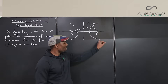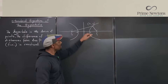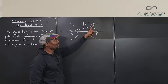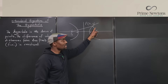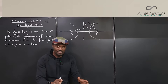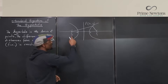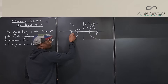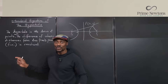All the points on this curve satisfy this definition. If you pick any point — let's call it P — the distance from P to one focus compared to the distance from P to the other focus will always have a constant difference, whether you are on this branch of the hyperbola or the other branch.